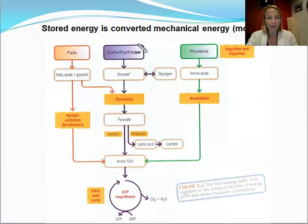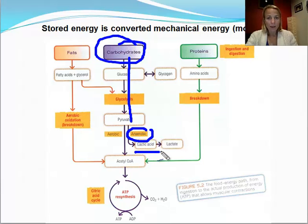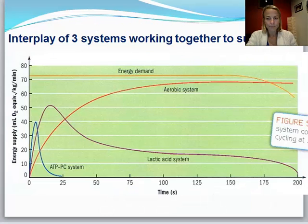This diagram illustrates that when we are working anaerobically, our fuel is carbohydrates, broken down with insufficient oxygen. We produce ATP and we also get lactic acid, lactate, and hydrogen ions.